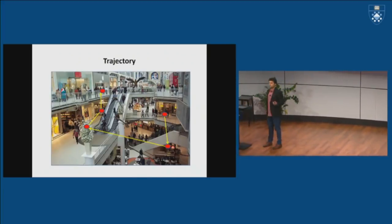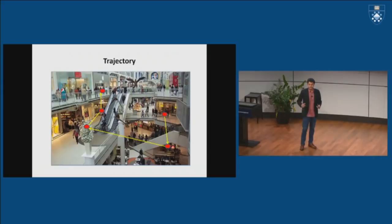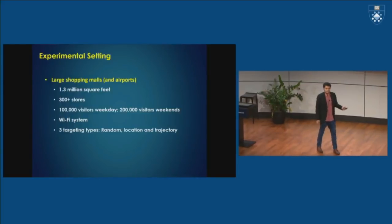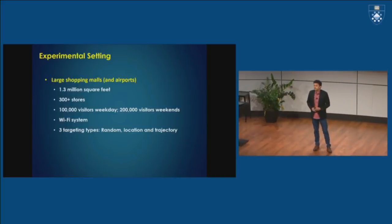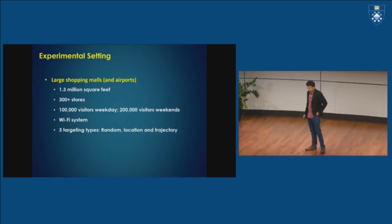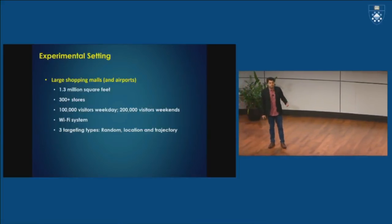So we ran a number of these randomized field experiments in some pretty large shopping malls across Asia. Some of them had 300 stores, several million square feet in footage, 100,000 visitors per day, and so on. And it was done in a very transparent way, so people knew exactly what they were getting into, meaning that if you opt in to share your Wi-Fi data, then you will be getting an offer. If you don't want to, you can still access the Wi-Fi, but if you don't opt in, then you won't be getting the offer.